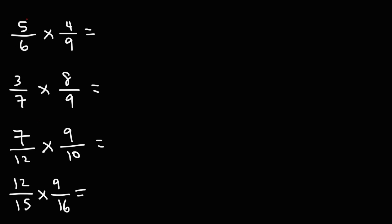Starting with the first one, let's multiply 5 by 4. 5 times 4 is 20. And then we have 6 times 9, which is 54. 20 and 54 are even numbers. We can reduce them. If we divide 20 by 2, it will give us 10. If we divide 54 by 2, it will give us 27. So the answer is 10 over 27.